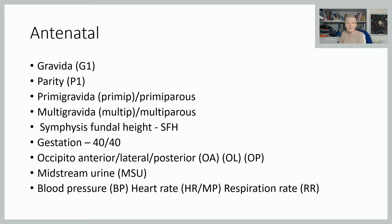Midstream urine is MSU — you ask someone to pass a little urine, catch the middle portion into the container, then pass the rest. Blood pressure, heart rate and respiration rates are usually abbreviated to BP, HR for heart rate or MP for maternal pulse, and RR for respiration rate.